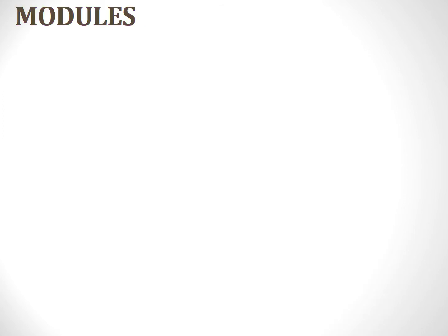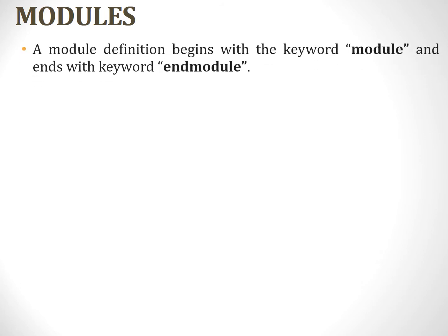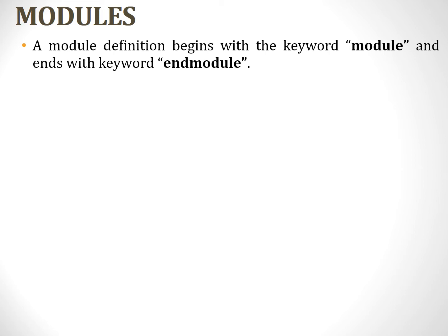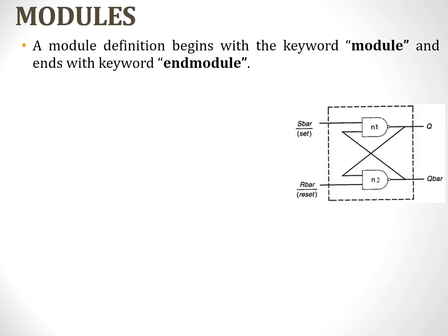Let us understand the module definition with an example. Every module begins with the keyword module and ends with the keyword endmodule. We will consider an example of an S-bar R-bar latch constructed using two cross-coupled NAND gates. We have S-bar and R-bar as inputs, and Q and Q-bar as outputs. Since we have the circuit diagram at gate level, it is easy to write a gate-level description.